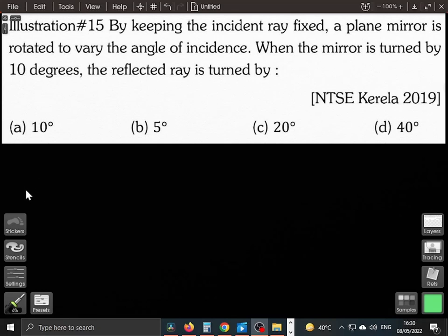Hello and welcome. Let's solve this problem at hand. This problem says that by keeping the incident ray fixed, a plane mirror is rotated to vary the angle of incidence. When the mirror is turned by 10 degrees, the reflected ray is turned by how much angle?